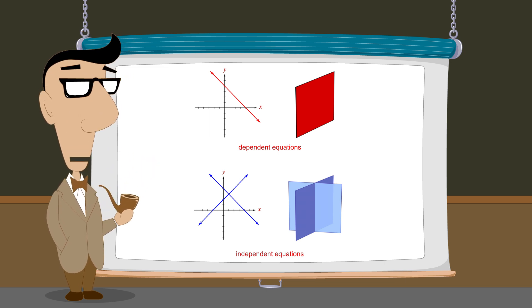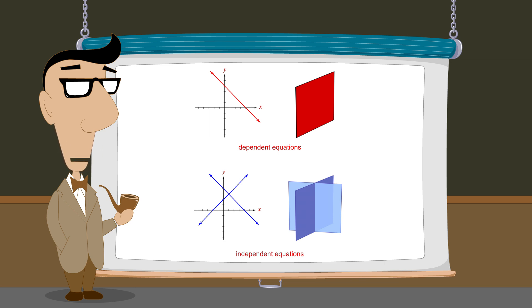Now that we have seen how systems of three linear equations in three variables can be visualized, in the next lecture we will see how these systems can be solved.